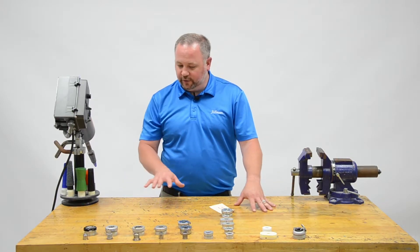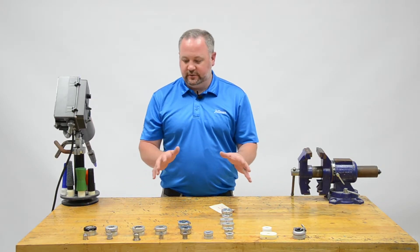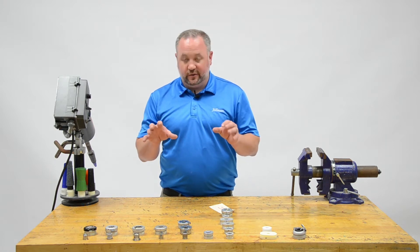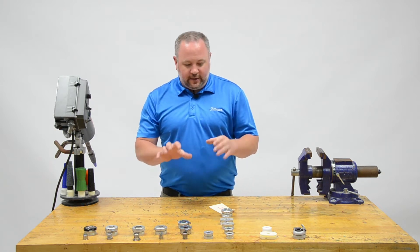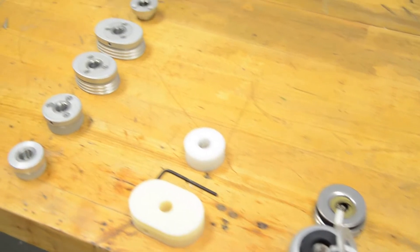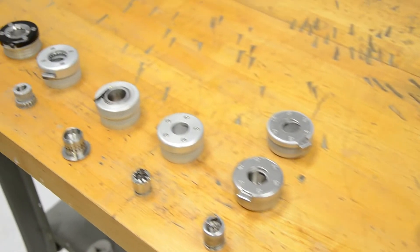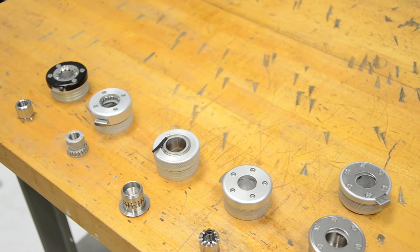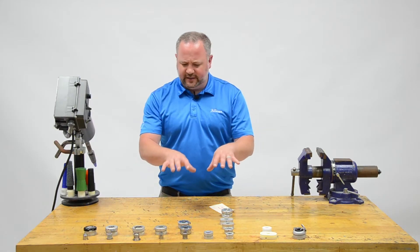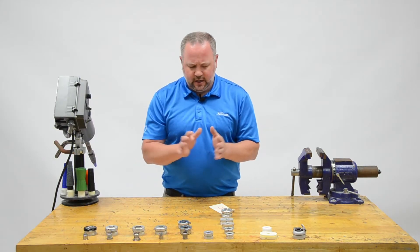When fitting upper extremity body-powered devices, one of the biggest challenges is choosing the right wrist for the job. There are a lot of options. I think at one point I counted 56 different options in wrists. Obviously this is not all the wrists we have, but this will give you a pretty good idea of what those options look like.